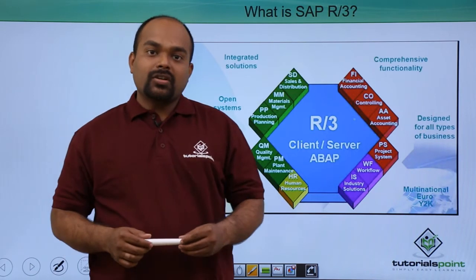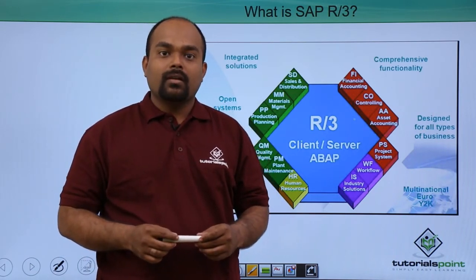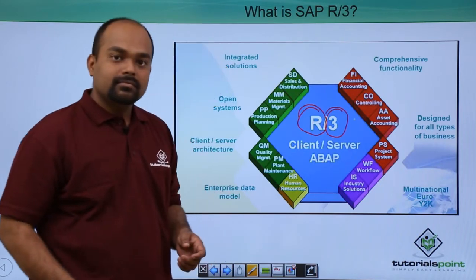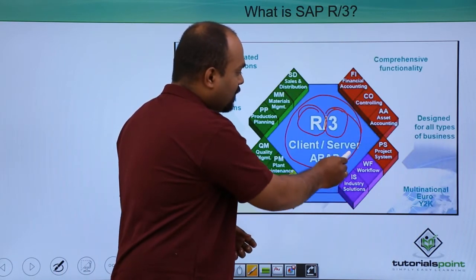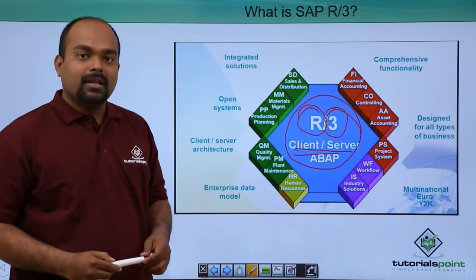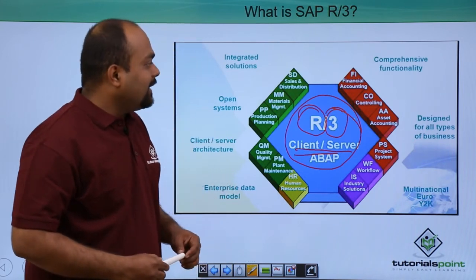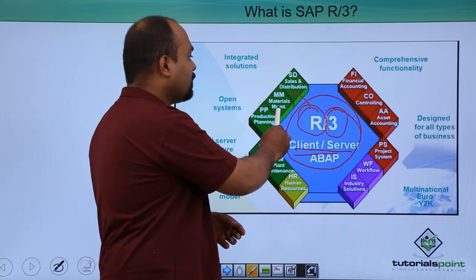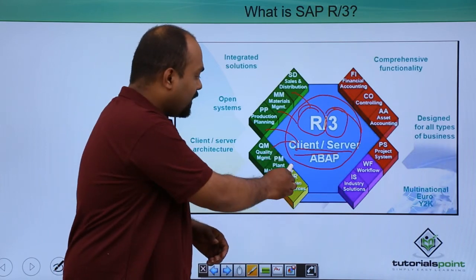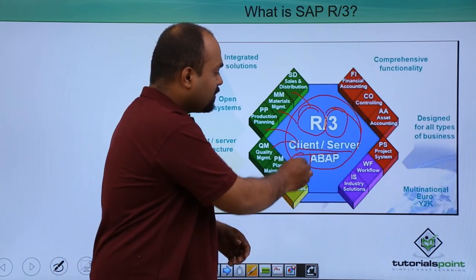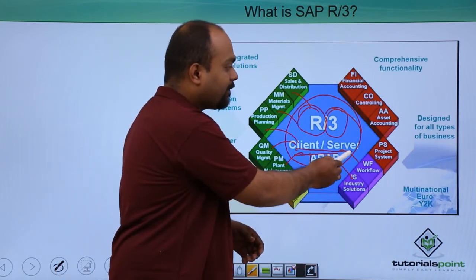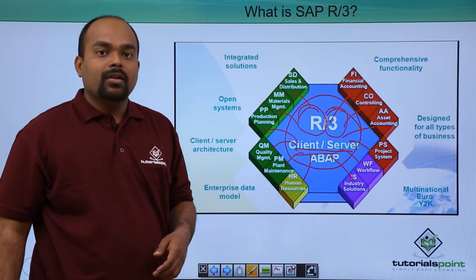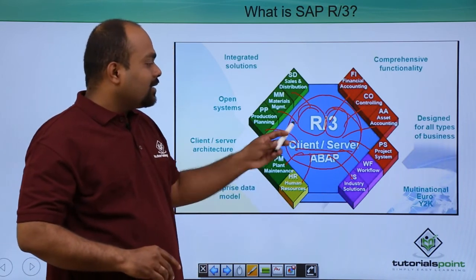In the structure of SAP R3, R means real-time integration and 3 means three-tier architecture. The client-server is developed using ABAP. SAP R3 integrates different modules including Sales and Distribution, Material Management, Production Planning, Quality Management, Plant Maintenance, Human Resources, Industrial Solution, Workflow, Project System, AI Assistance, CO Controlling, and Finance Accounting. All these modules are integrated with the SAP R3 client-server.